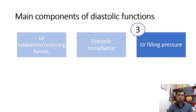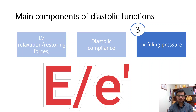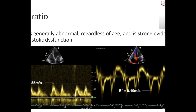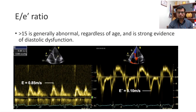The third component of diastolic function assessment is LV filling pressure, estimated using the ratio of the peak mitral inflow E wave velocity to the mitral annular tissue Doppler E' velocity. Elevated E/E' ratios are associated with increased likelihood of elevated filling pressure. The E/E' ratio is the best non-invasive estimation of LV filling pressure on echocardiography. Normal E/E' ratio is between 8 to 15. If it is more than 15, this is generally abnormal regardless of age and is strong evidence of LV diastolic dysfunction.